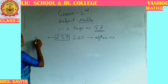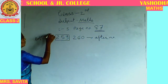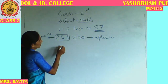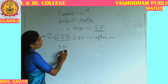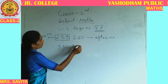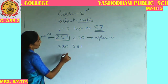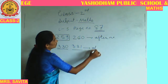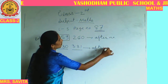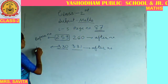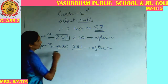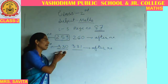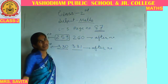This number is known as the before number, and this number is known as the after number. Let's take some simple examples. Now 330 — what is the after number of 330? 331. Right. So 331 is the after number and 330 is the before number.